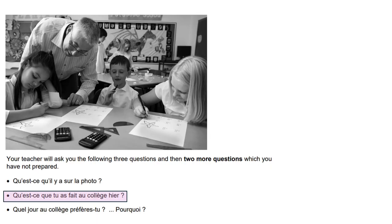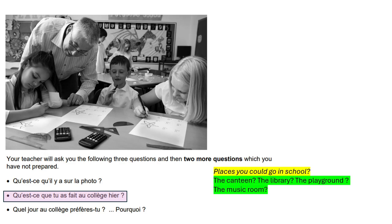I'm going to give you an example to try now. I would like you to answer this question: 'Qu'est-ce que tu as fait au collège hier?' — What did you do at school yesterday? Be careful — you might be tempted to say 'yesterday in school I went to maths', but that doesn't sound natural. Instead, think about a place you might have gone in school: the canteen, the library, the playground, the music room — whichever one you know how to say. Leave your responses in the comments and I'll give you feedback. Merci, au revoir!